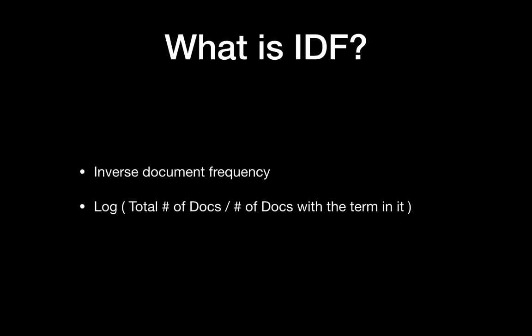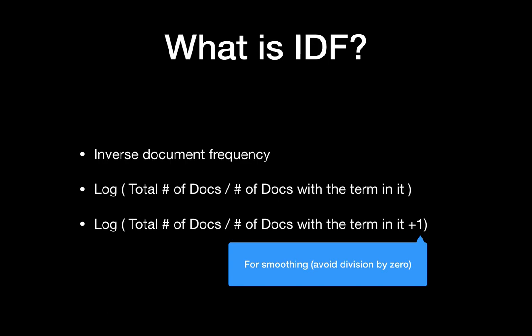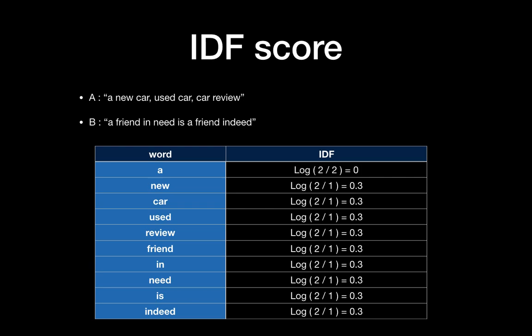IDF means Inverse Document Frequency. The equation is: log(total number of documents / number of documents containing the term). There is also an advanced version that adds one to the denominator for smoothing, to avoid division by zero. Here we will use log(total docs / number of docs with the term).